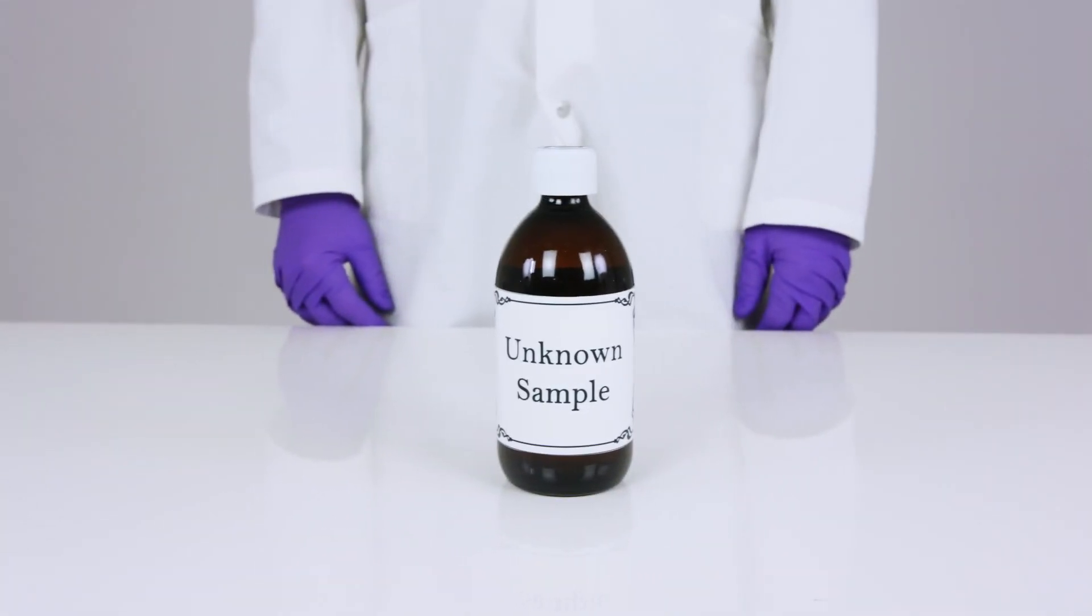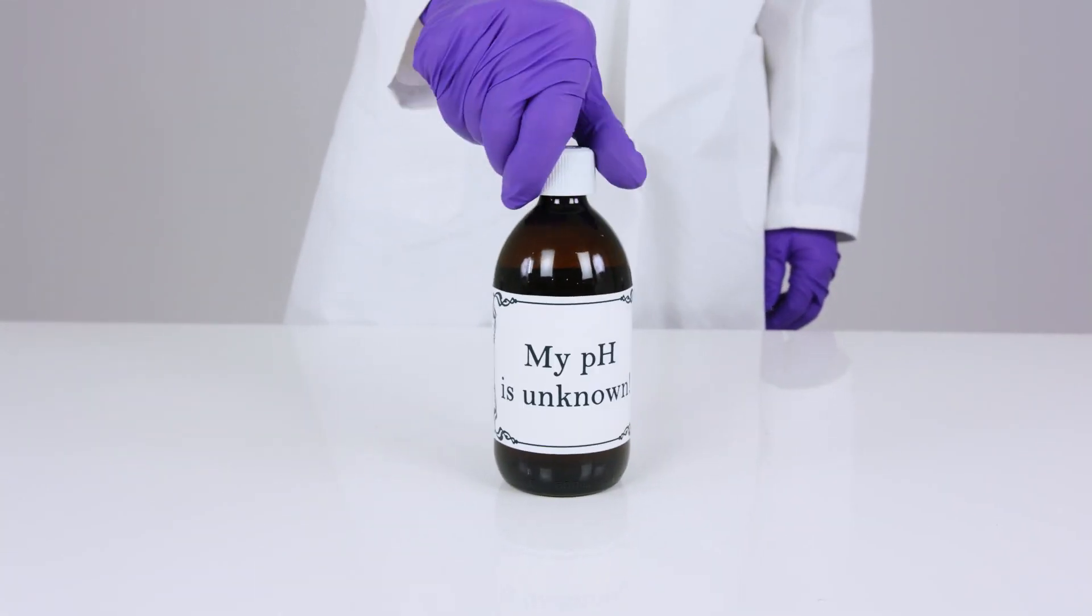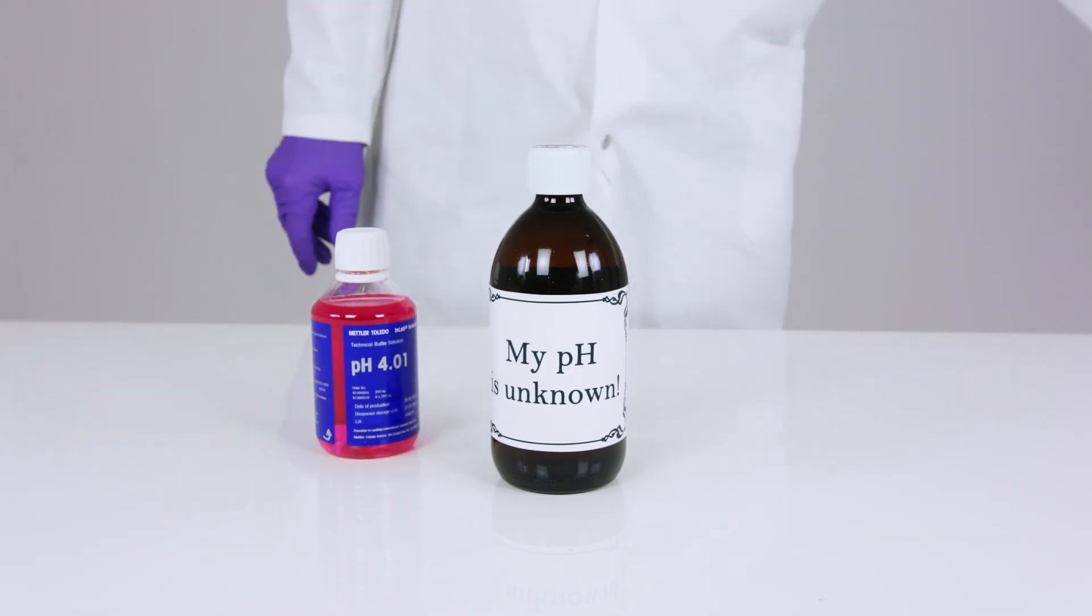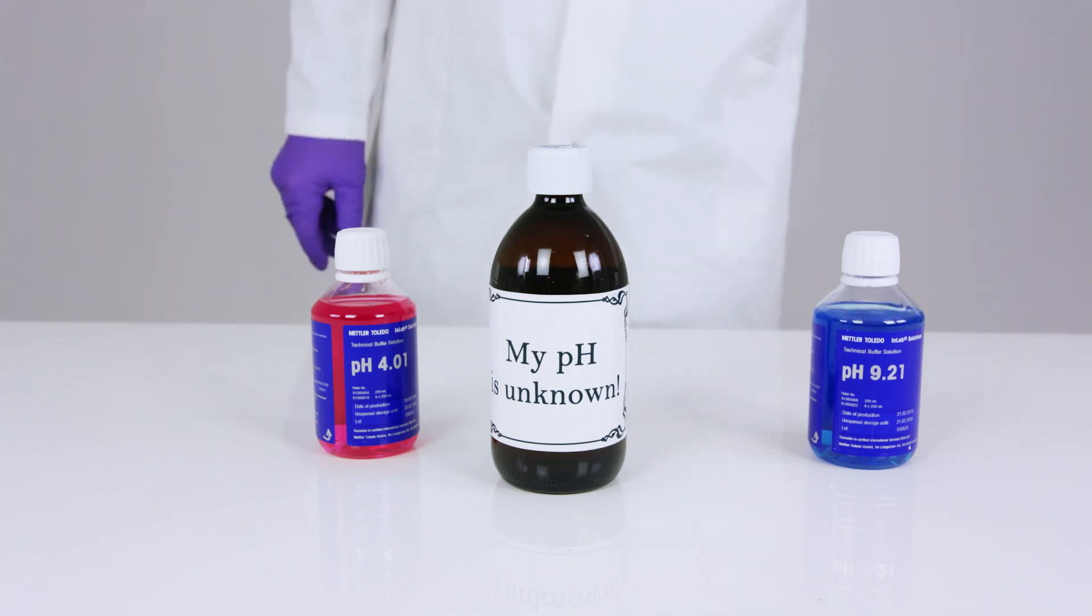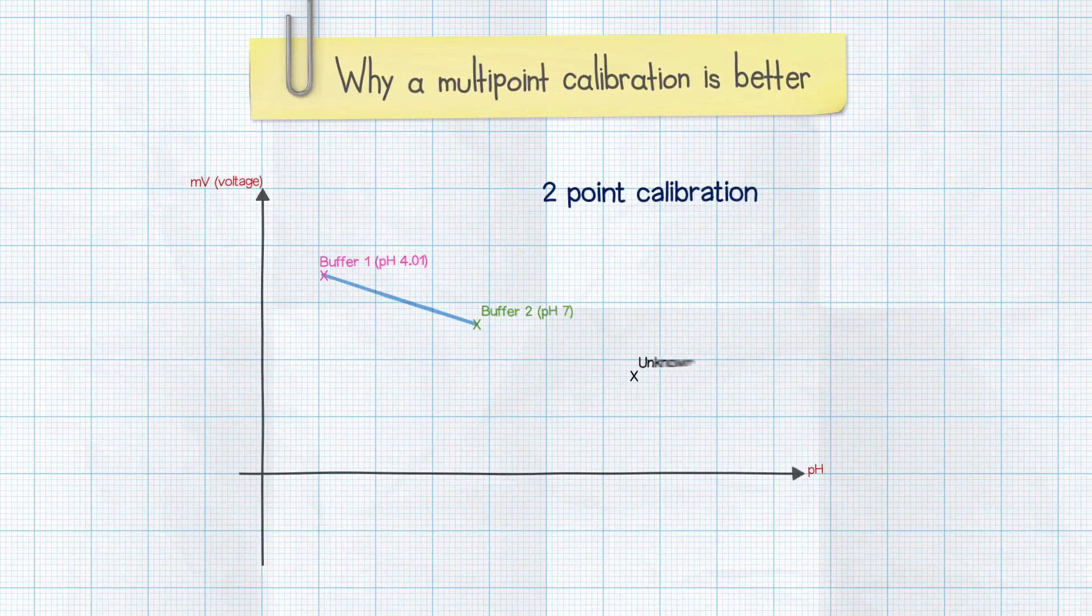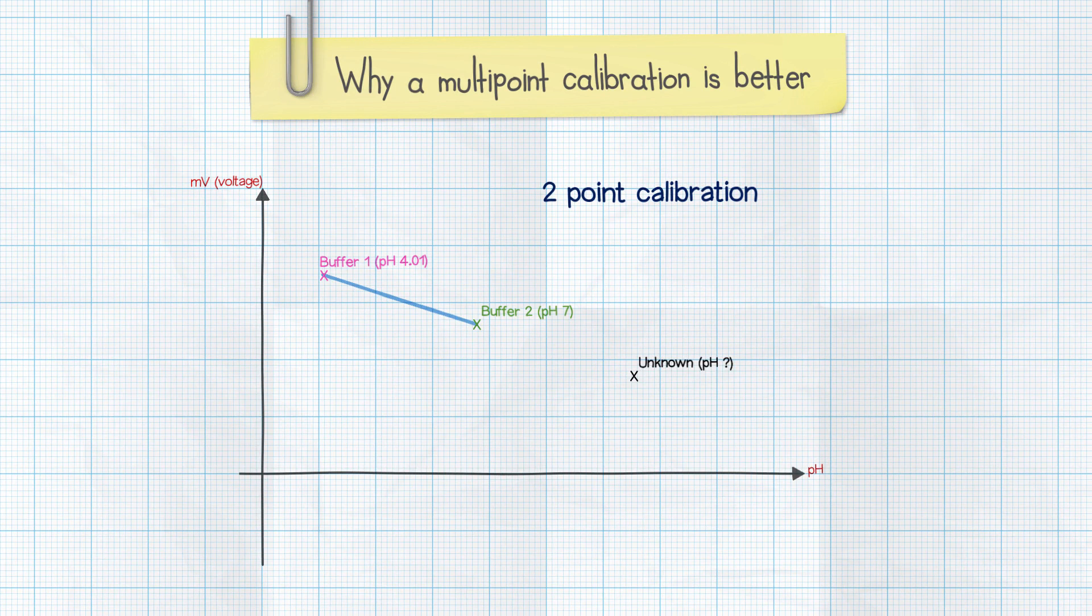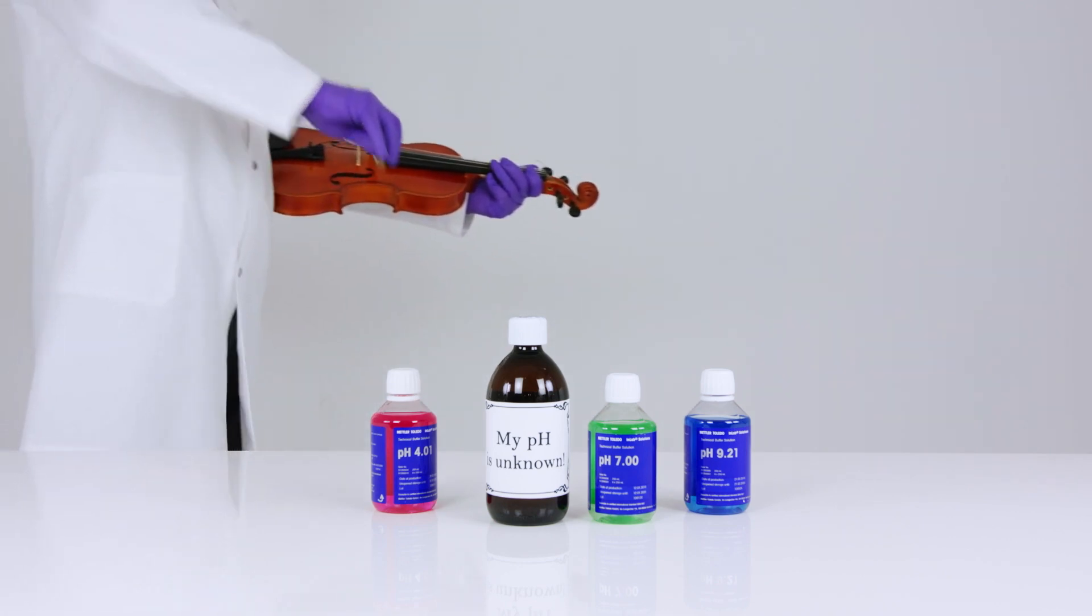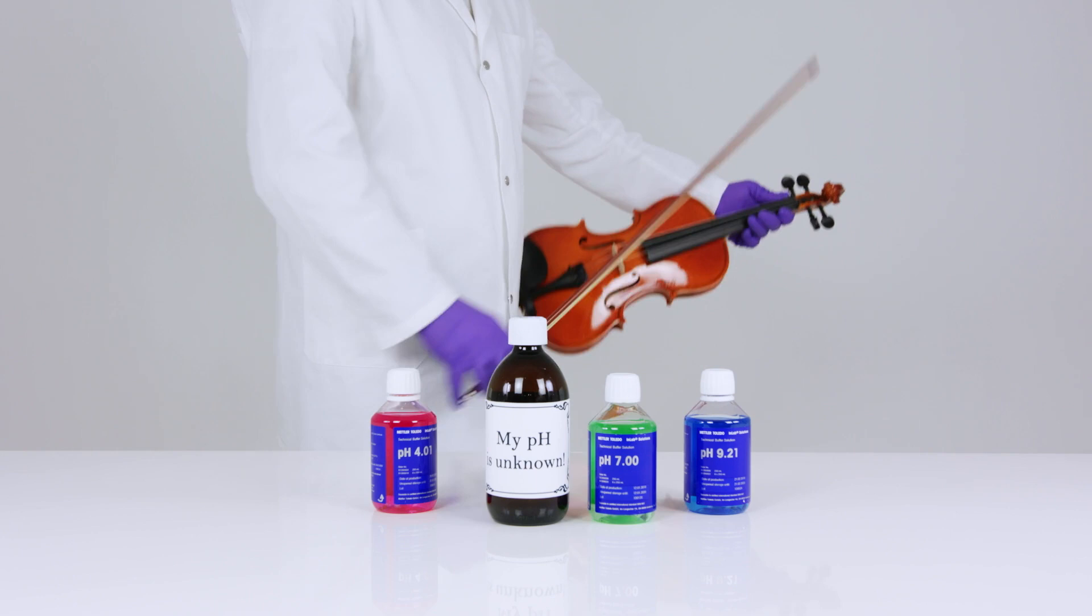If you have no idea what your sample is going to be, or if you're going to be measuring samples with varied pH values, then it's best to use a multipoint calibration to provide a wider calibration range. If you measured these varied samples with only a two-point calibration and the pH sample happened to be out of this range, the reading would be inaccurate. We use a three or more point calibration to provide a wide range without affecting the accuracy of the measurement. It's like tuning all the strings on the violin instead of just one. This allows us to hear more music. No. Hans. Later.